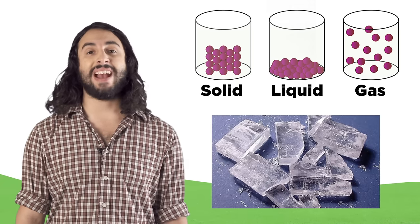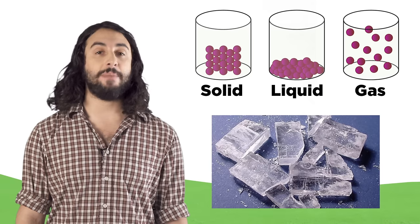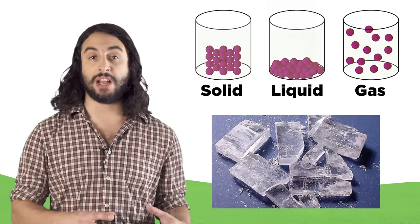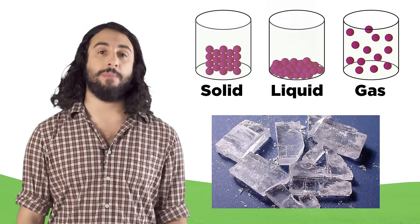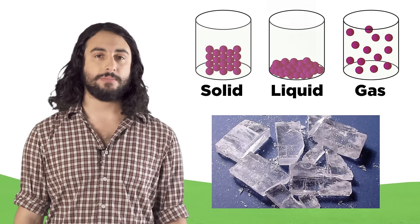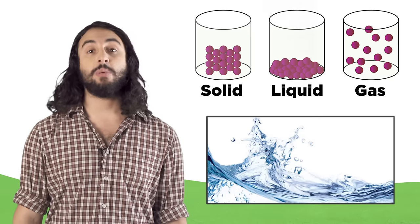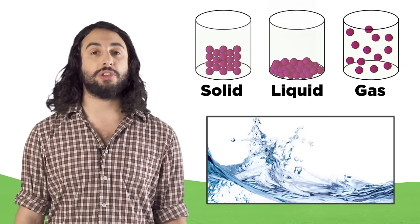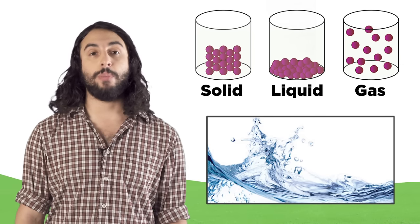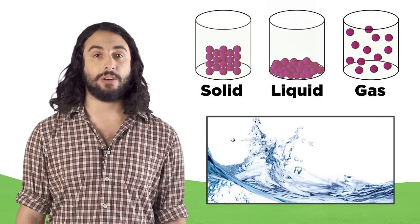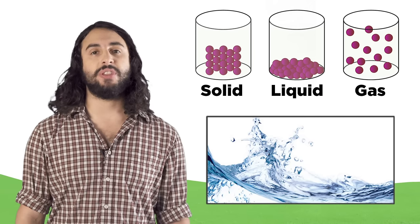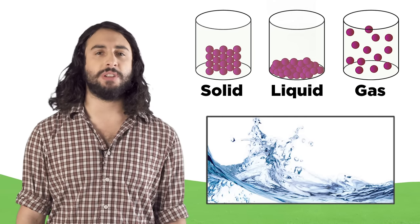A solid has fixed shape and volume. The particles are touching and do not move. A liquid has fixed volume but no fixed shape — it will mold to its container. The particles are still touching, but they do move fluidly.